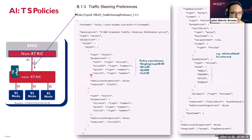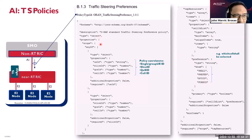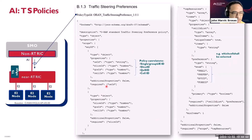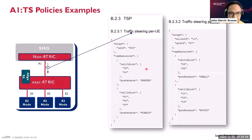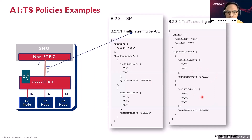Drilling down into the policies — you can see here the UEs, the 5QI, and the cell ID. These define your preferences: whether a cell is preferred, to be avoided, or forbidden. This is in JSON format — a high-level language, similar to Python, so it's easy to program. These are the policies that guide how decisions are made — in this case, on the steering. Another policy here includes the cell list and the preference. If it's preferred, you'll go there. But if the conditions aren't met, you go to the next decision. If it's a 'shall' condition and you don't meet it, you simply cannot proceed.